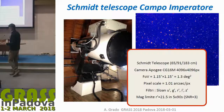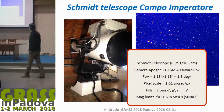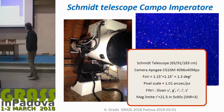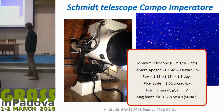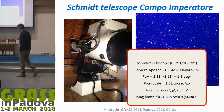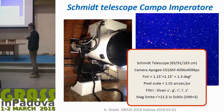Within GRAVITA, we have a Schmidt telescope at Campo Imperatore, Italy — a 90 cm telescope with a one square degree field of view that we can use for the search.